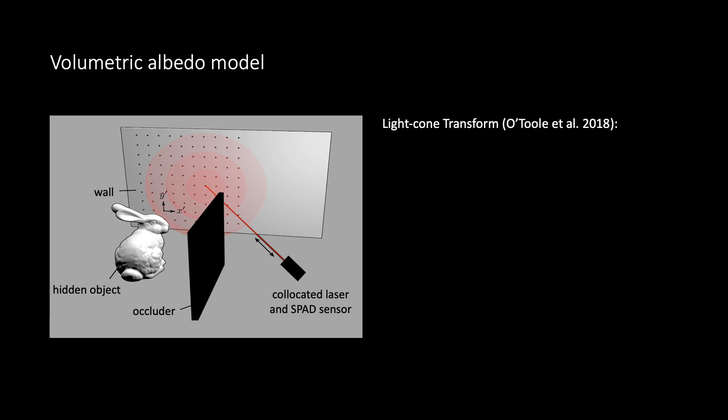Let us first review the confocal volumetric albedo model, proposed by O'Toole et al., which reconstructs the hidden scene as a volume of albedo. Here, a location x'y' on the wall at time t captures albedo rho from all scene locations x, y, z, which take the pulsed laser half d seconds to reach from x'y'. In matrix notation, this simply becomes tau equals k rho.